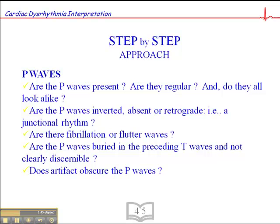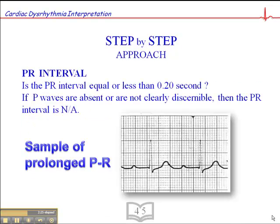Fibrillatory waves for the atria are really indistinguishable from artifacts, so we'll talk about that more when we discuss atrial fib. Are the P-waves buried in the preceding T-waves or not clearly discernible? If we're dealing with tachycardic rhythms such as supraventricular tachycardia, it's important to look at the preceding T-wave and see if there are notches or P-waves superimposed on its downslope. If we see that consistently, we're likely dealing with evidence of atrial depolarization. And if artifacts obscure the P-waves, we need to troubleshoot — help the patient keep still or move the electrodes away from large muscle mass to get a clear tracing.